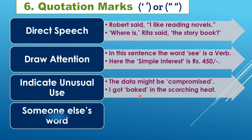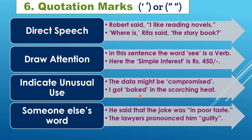Quotation marks are used for someone else's words — words that are not your own. For example: 'He said the joke was in "poor taste"' — those are his words, not yours. 'The lawyers pronounced him "guilty"' — this is what they are saying. Whenever using somebody else's words, mention it by using inverted commas, preferably double inverted commas.